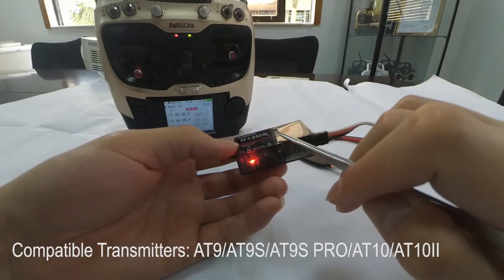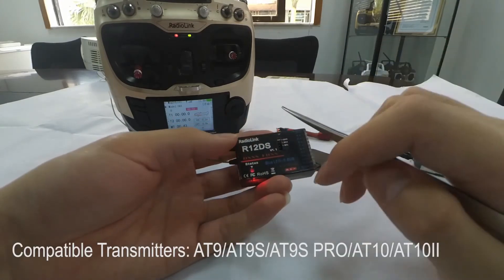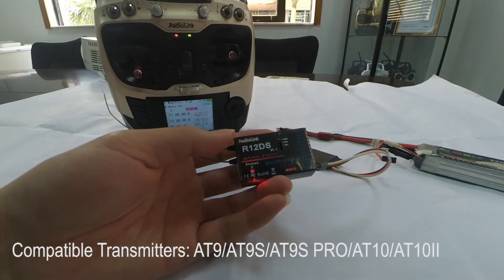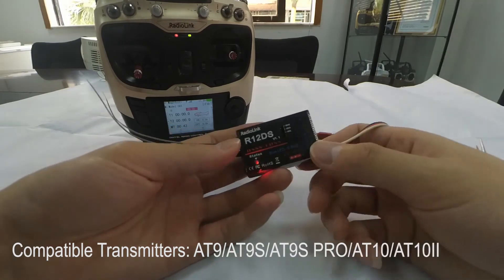The R12DS receiver is compatible with RadioLink Transmitter 89S, 89S Pro and 8010.